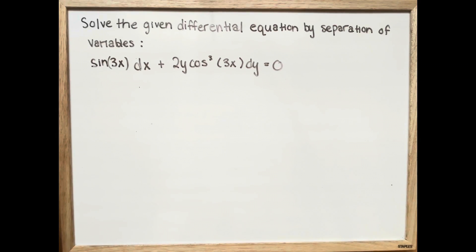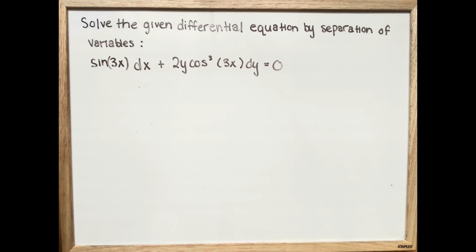Solve the given differential equation by separation of variables. Sine 3x dx plus 2y cosine 3x to the power of 3 dy is equal to 0.